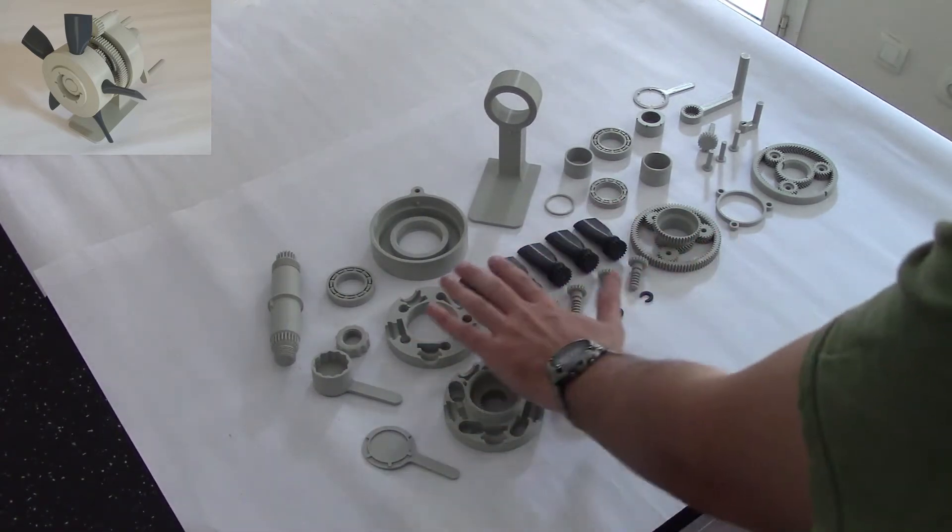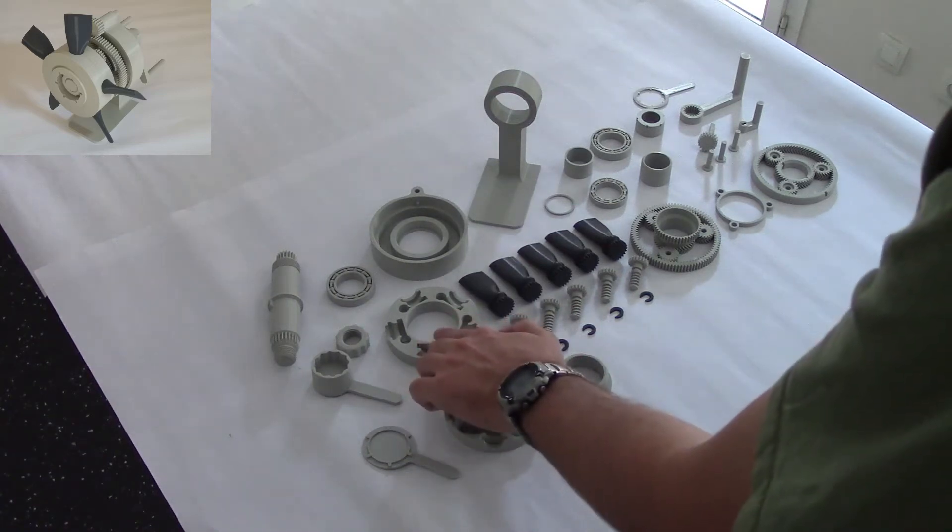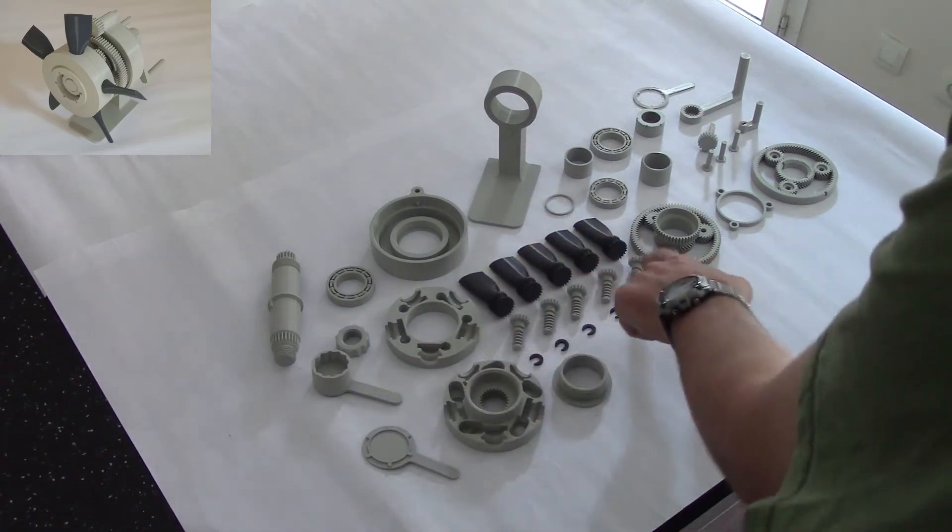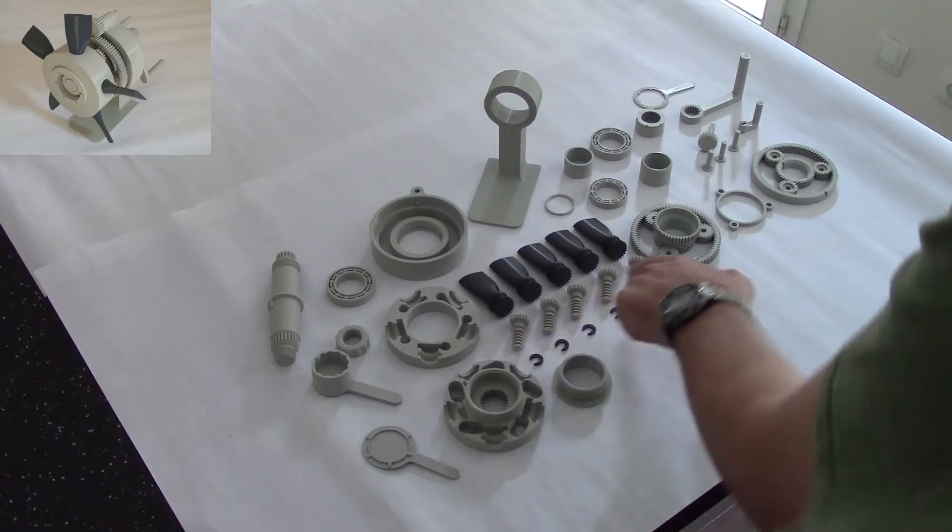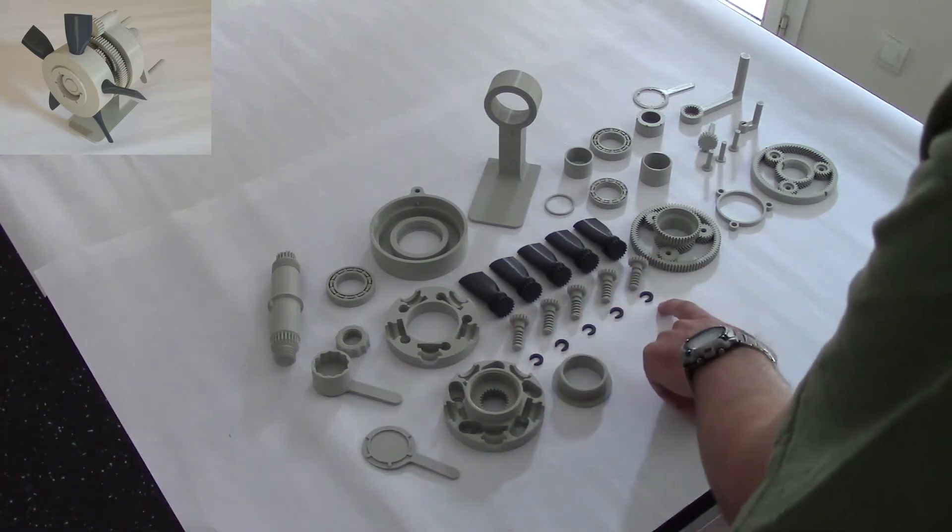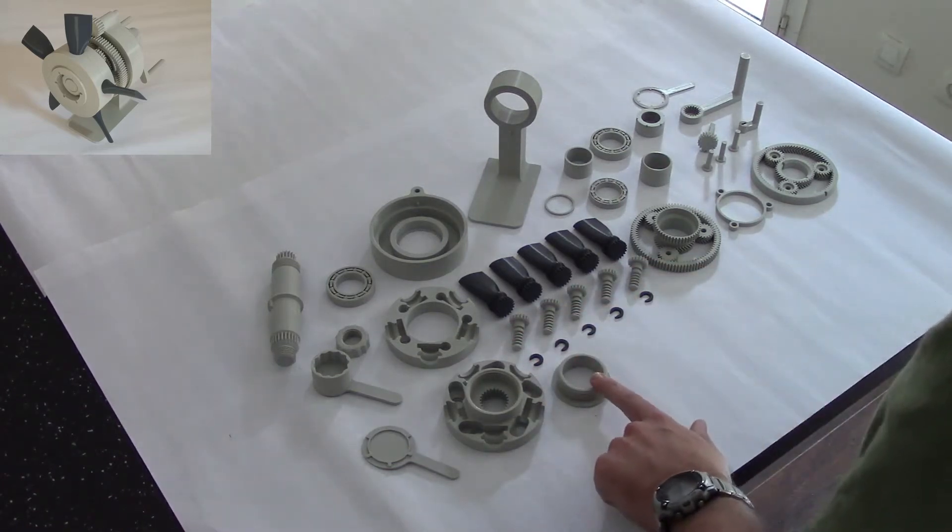It's these parts here: the two hub halves, five blades, five worm gears for the blades, five thrust washers, and the hub nut as well.